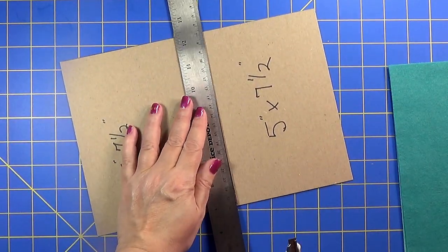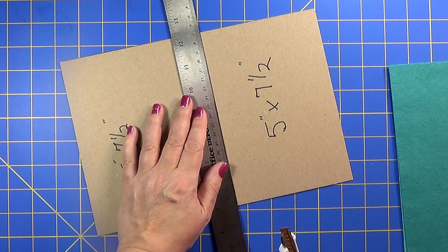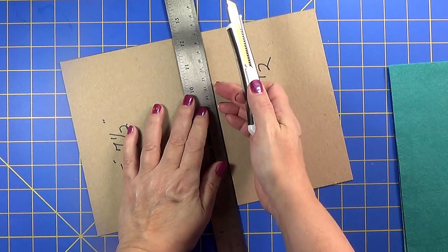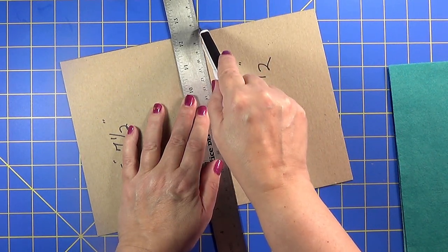I have determined that I want my inside pages to be five by nine, I mean sorry, five by seven and a half. Now I will need to cut some of it down a little bit later, but this would be the largest I would want to be.